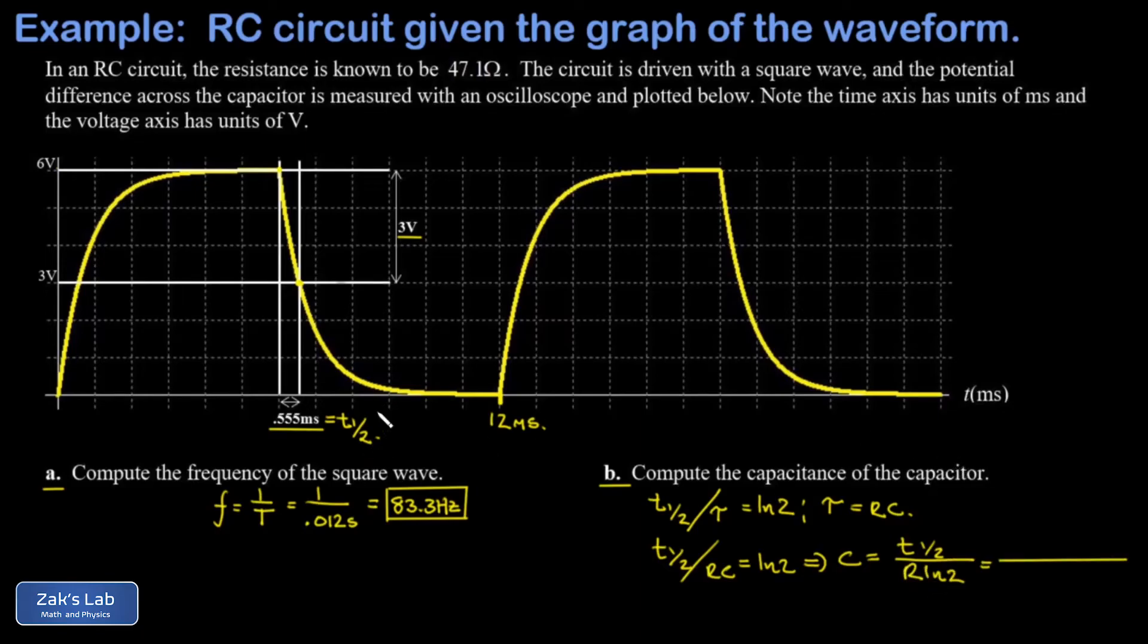Now my half-life is displayed right there on the oscilloscope, is 0.555 milliseconds which we'll write as 0.000555 seconds and then my resistor measured at 47.1 ohms and then I have a natural log 2 factor in there. And when I run the numbers on this I get 1.70 times 10 to the negative 5th farads and I can change that to 17.0 microfarads.